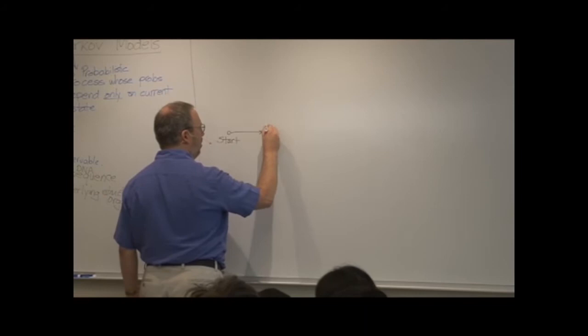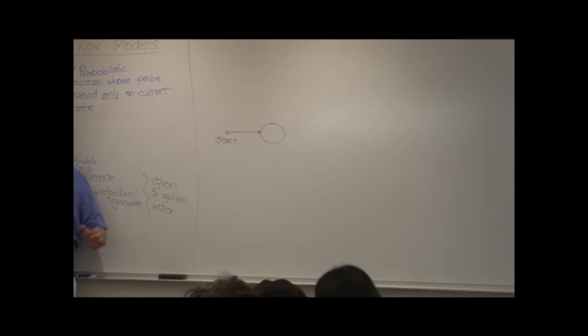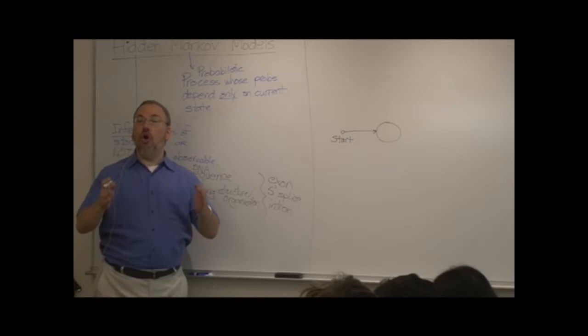So I'm going to start with sort of a general diagram of the system. Think of this as a flow chart, if you like. So when we are obtaining DNA sequence, we start at a particular position. And in this nice, simplistic model,